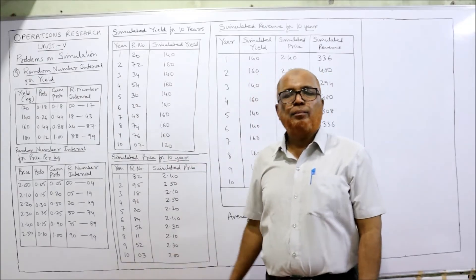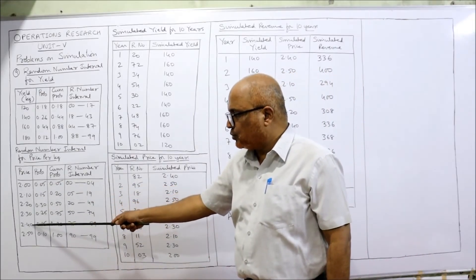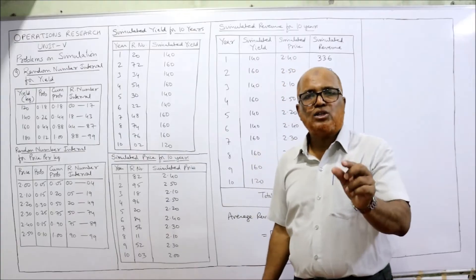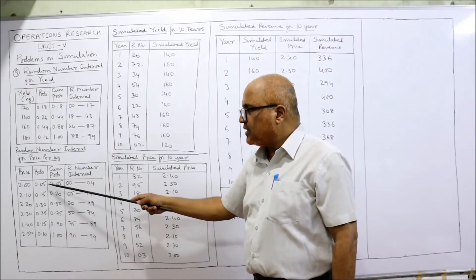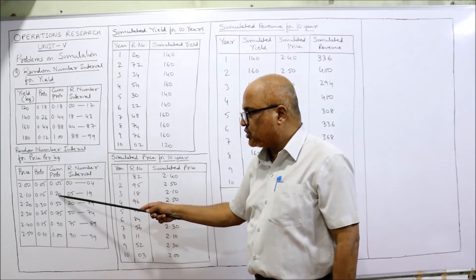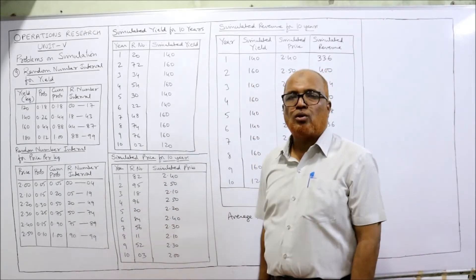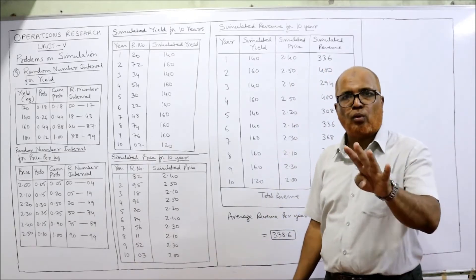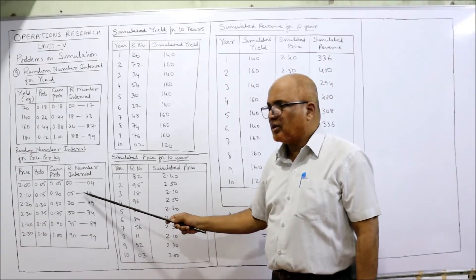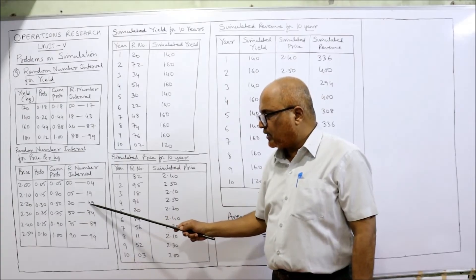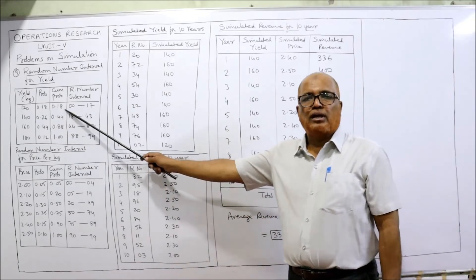Now the random number coding for prices. The prices are 2.00, 2.10, 2.20, 2.30, 2.40, and 2.50, with respective probabilities. Computing the cumulative: 0.05, 0.20, 0.50, and so on. The intervals are: 00–04 for 2.00, 05–19 for 2.10, 20–49 for 2.20, 50–74 for 2.30, 75–89 for 2.40, and 90–99 for 2.50.